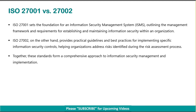ISO 27001 sets the foundation for an information security management system, outlining the management framework and requirements for establishing and maintaining information security within an organization. ISO 27002, on the other hand, provides practical guidelines and best practices for implementing specific information security controls, helping organizations address risks identified during the risk assessment process.